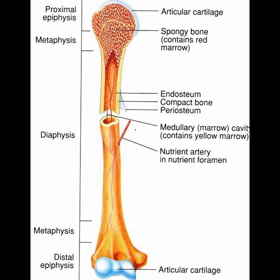The long bones of the human leg comprise nearly half of adult height. The other primary skeletal component of height are the vertebrae and skull.